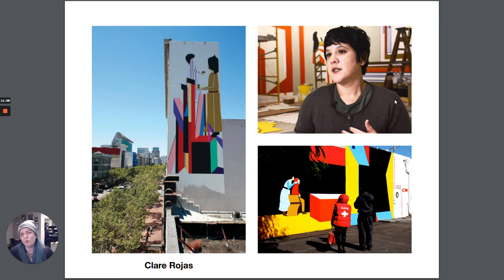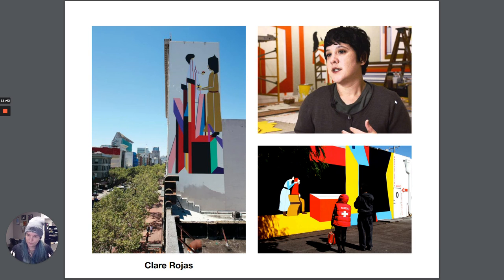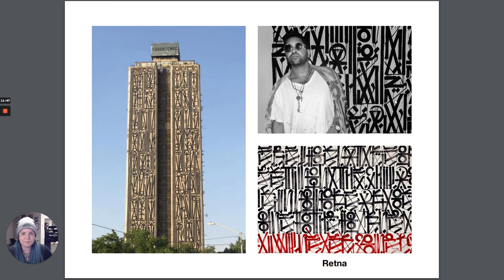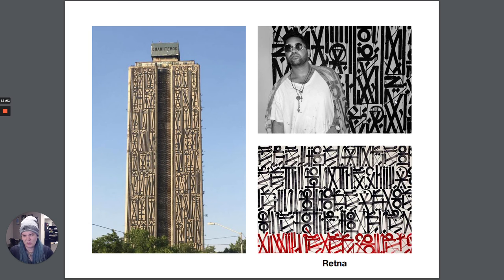Clare Rojas is a muralist and street artist whose work is interesting because it's more abstracted — freehand spray painting combined with latex paint that she rolls on. It doesn't fit into the typical graffiti styles you see. Retna is super interesting too — he does work that creates a kind of symbolic language, looking a little like cuneiform, using almost calligraphy-like, text-adjacent pattern work.